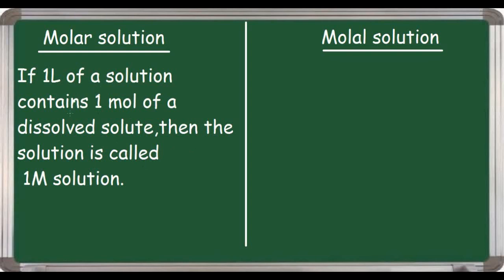The important thing to notice here is the solution volume — the entire volume of the solution should be 1 liter. In that 1 liter, the dissolved amount of solute should be 1 mole. For example, if you have a solution with an entire volume of 1 liter containing 1 mole of NaCl, then the molarity is 1 molar.